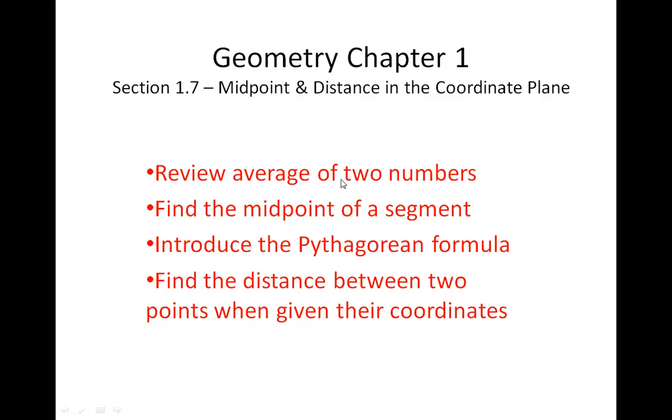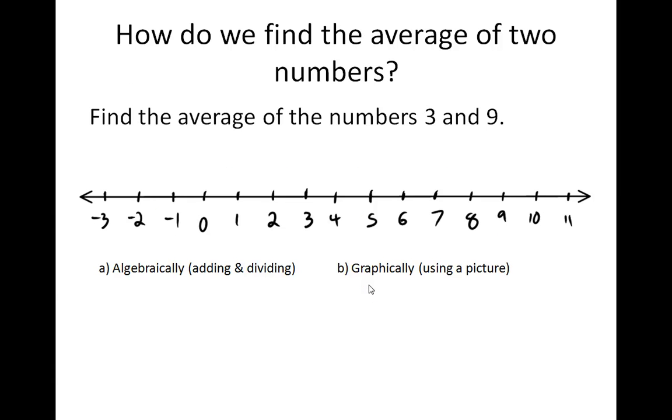We're going to review a few things first. We're going to talk about the average of two numbers, relate that to the midpoint of a segment. We'll introduce Pythagorean formula, which you've probably seen before. It's that formula dealing with right triangles. And we're going to also find the distance between two points if we're given the coordinates. First, in this video, we're just going to talk about midpoint.